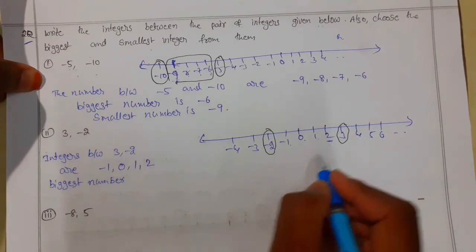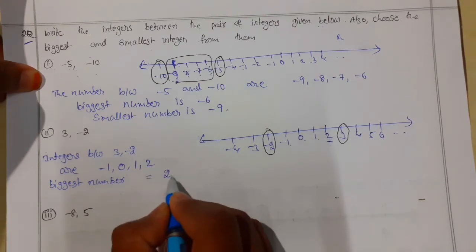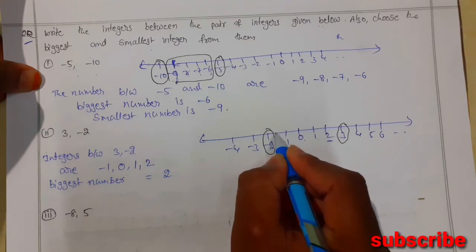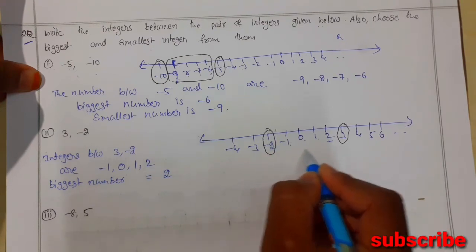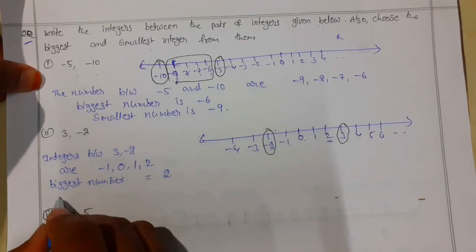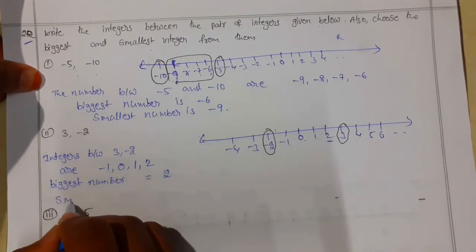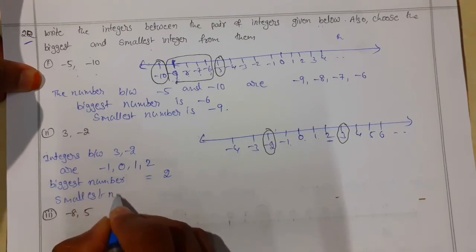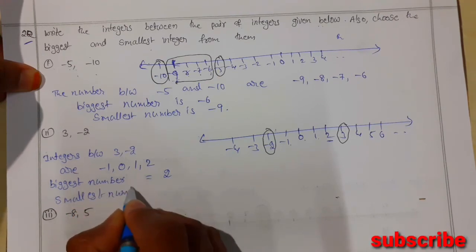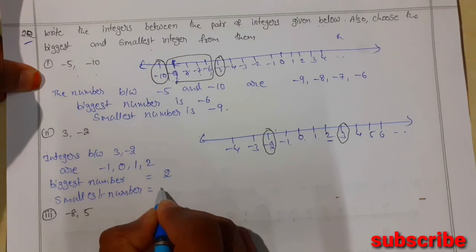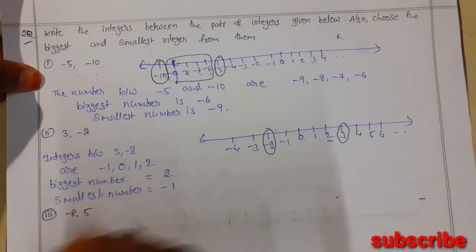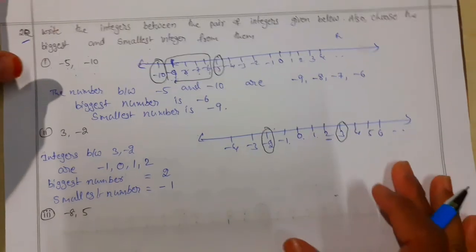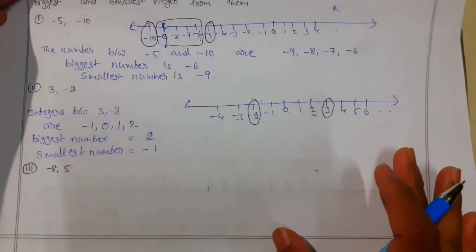The leftmost number out of these four numbers is minus 1, so the smallest number is minus 1. Likewise we can solve this. For the next question we have minus 8 and 5. Once you understand the concept, there is no need to use the number line.